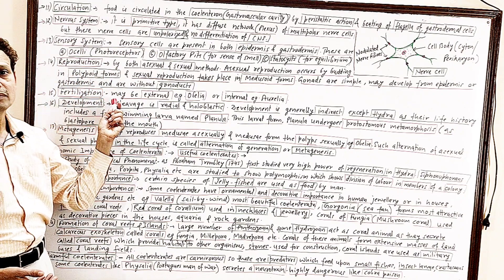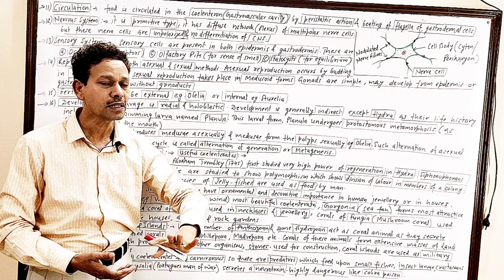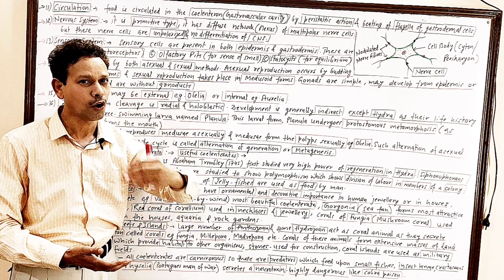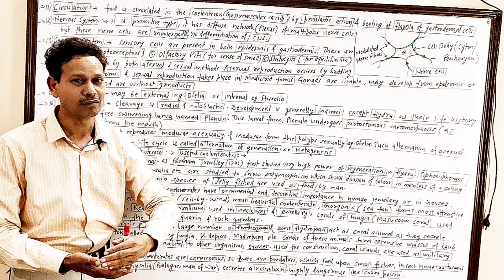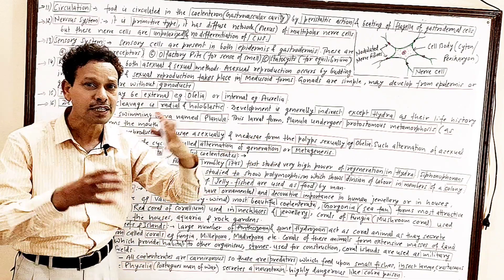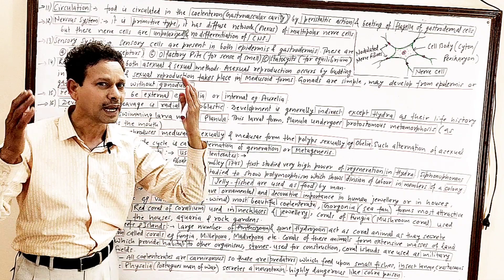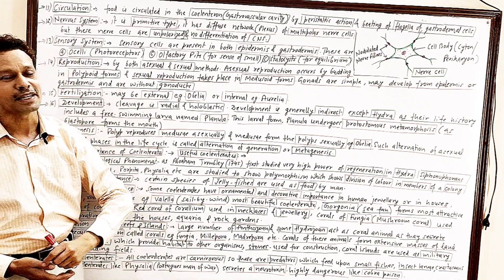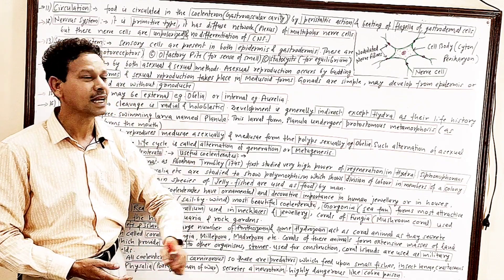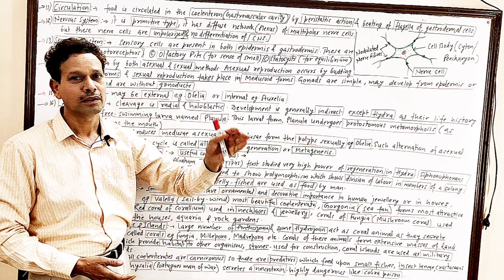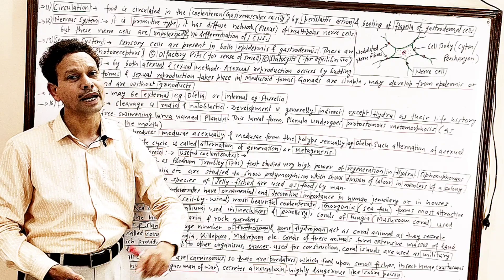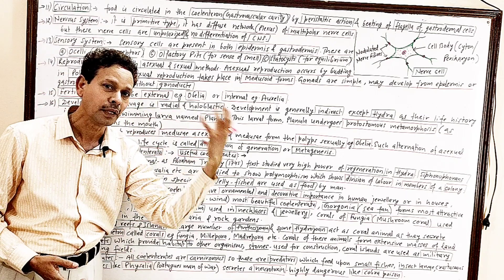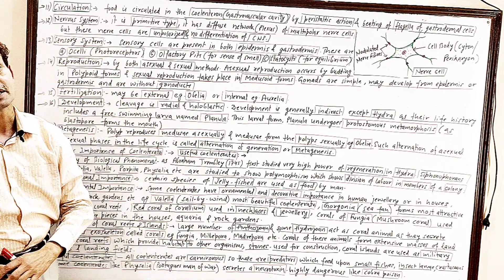Fertilization may be external, as in the case of Obelia colony, where both gametes are discharged into seawater — that is, fertilization occurs outside the body. But in some cnidarians, fertilization may be internal, as in the case of Aurelia, where gametic fusion takes place inside the body. So both types of fertilization — external and internal — may occur.